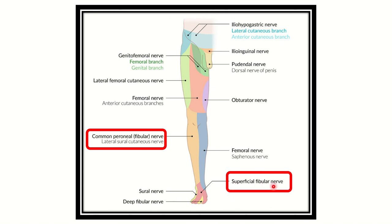The common peroneal nerve divides into two parts: the superficial peroneal nerve and the deep peroneal nerve. The first web space of the foot is supplied by the deep peroneal nerve, while the larger dorsal area is supplied by the superficial peroneal nerve. The medial aspect of the leg is supplied by the saphenous nerve, which is a branch of the femoral nerve. The obturator nerve supplies the medial or adductor aspect of the thigh, the femoral nerve supplies the front of the thigh, and the lateral femoral cutaneous nerve supplies the lateral thigh.